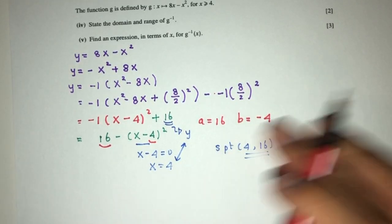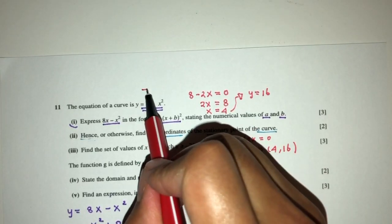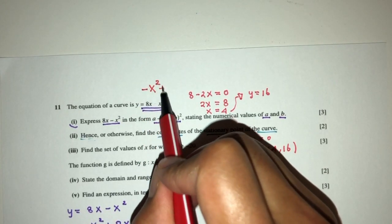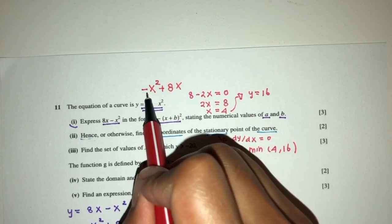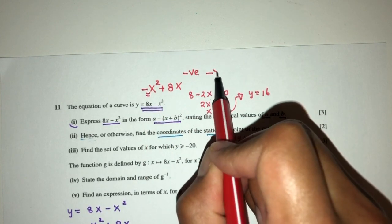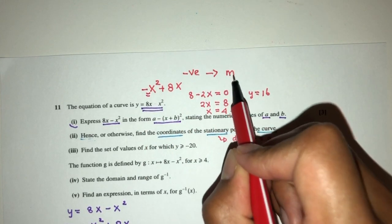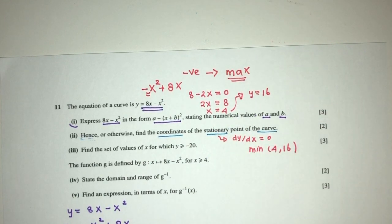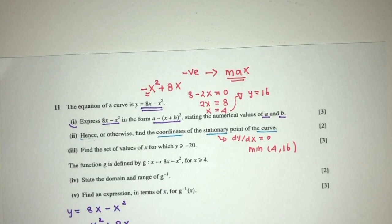We can see clearly that because the equation is minus x squared plus 8x, the coefficient of x squared is negative, so this will be a maximum point. This is useful if you are asked to state whether the stationary point is a maximum or minimum.